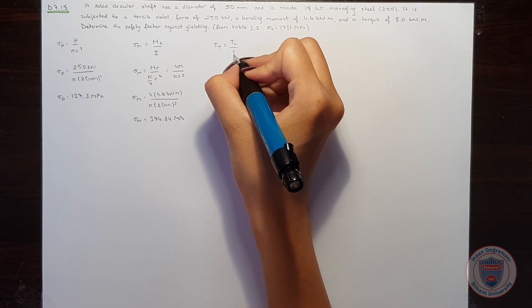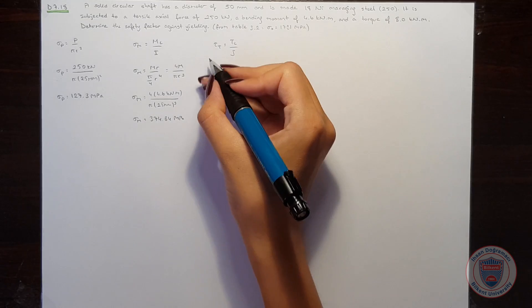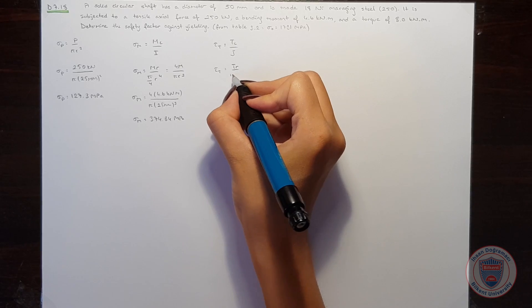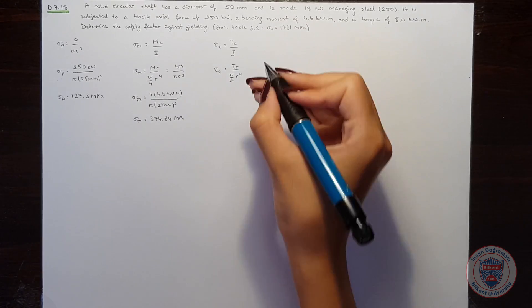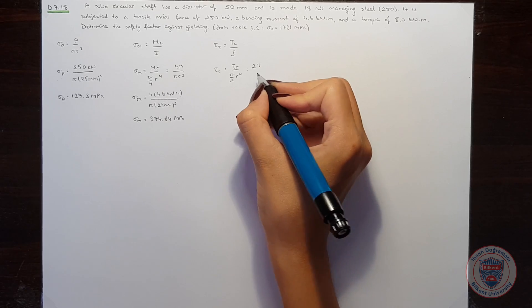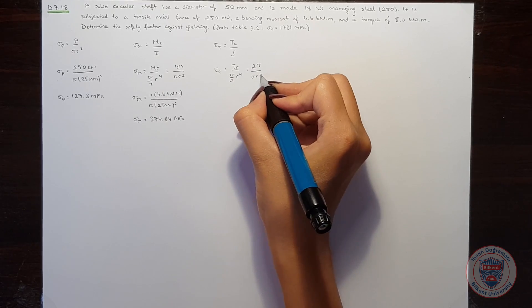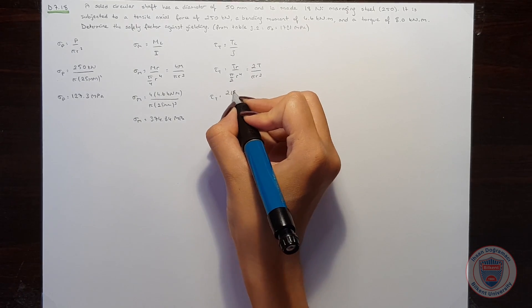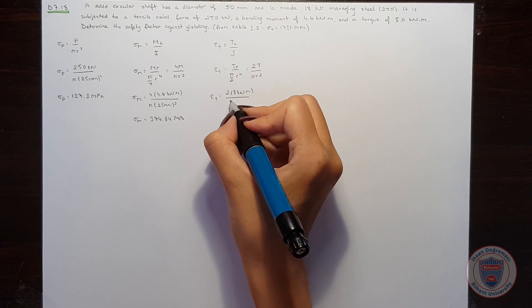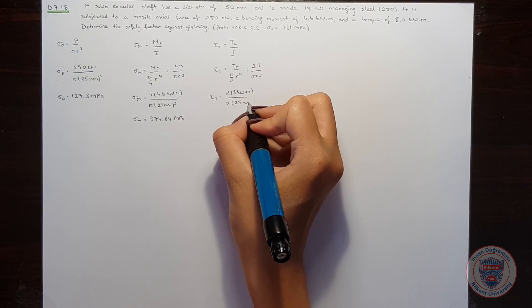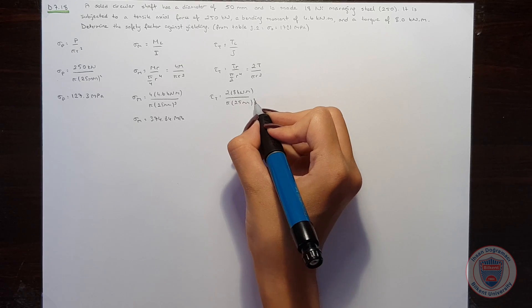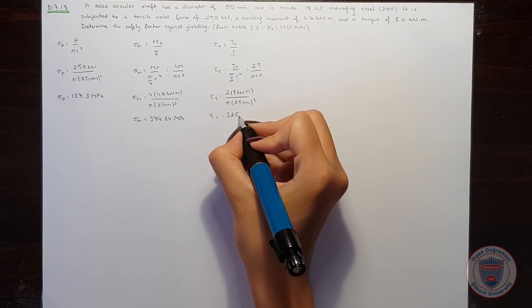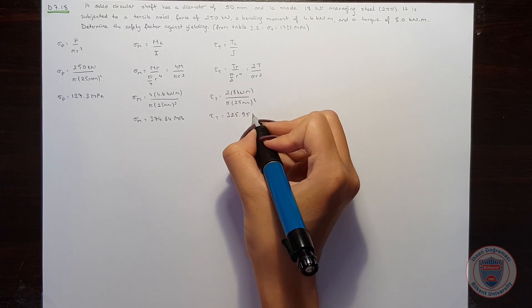And it will be Tc over the polar moment of inertia. We can also write it as TR over pi over 2 times r to the power of 4. And it will be 2t over pi r cube. And again, I am substituting the values. And we have tau t is equal to 325.95 MPa.